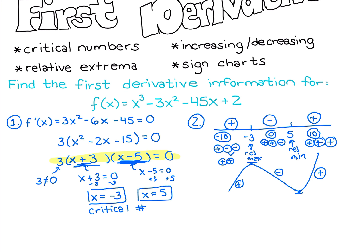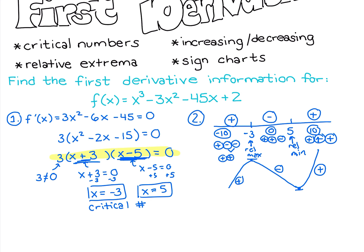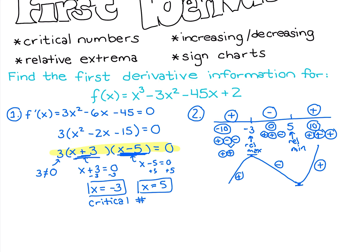So to summarize all the first derivative information, there's the general shape of the graph: increasing to a 0 derivative, decreasing to a 0 derivative, then increasing again after. You can draw a nice picture of that shape from this information.